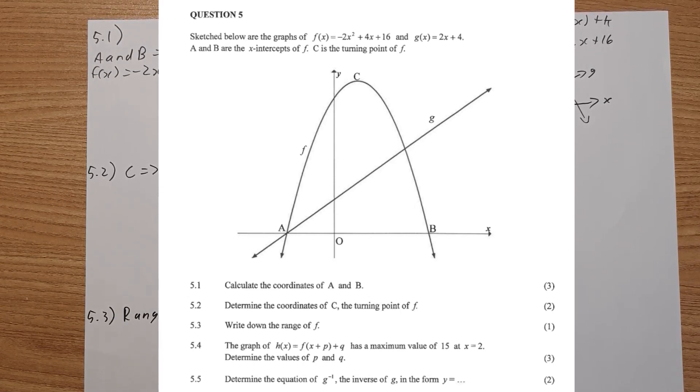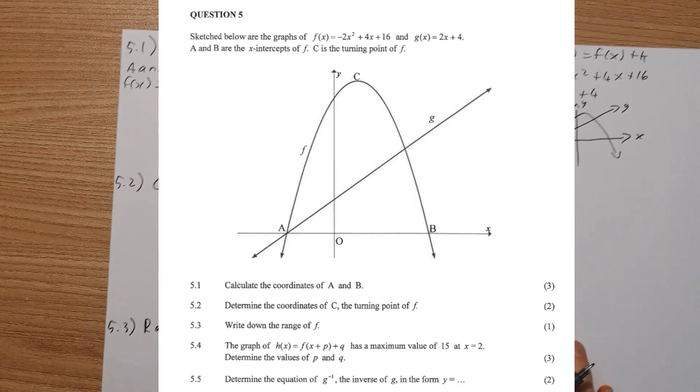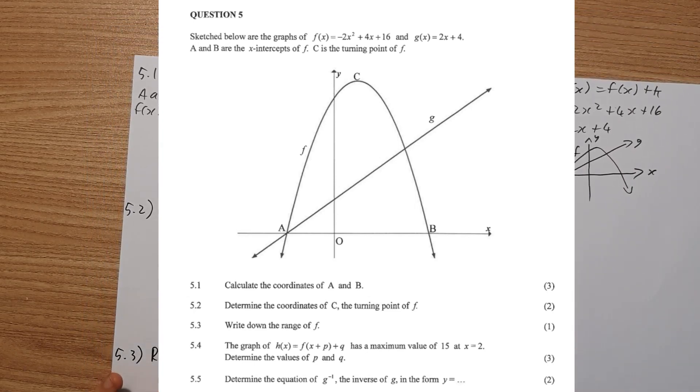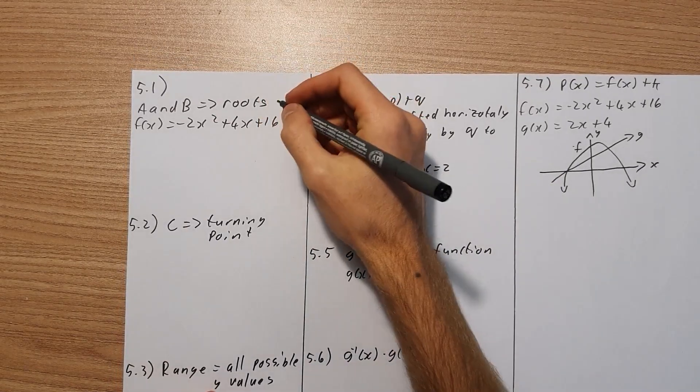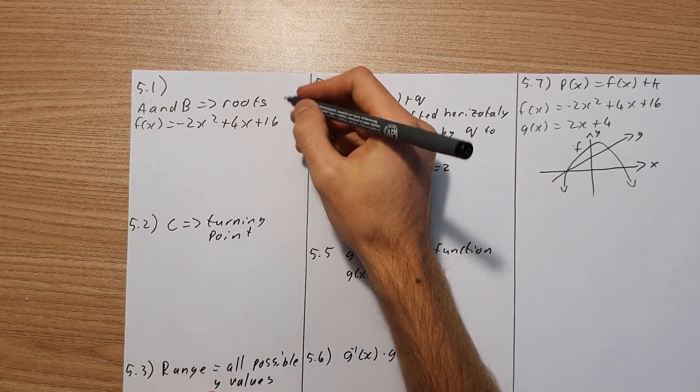They've told us as well that C is our turning point. So let's have a look at 5.1. 5.1 asks you to calculate the coordinates of A and B. So your answer needs to be in coordinate form. So A and B, if you look there, is going to be your x-intercept.